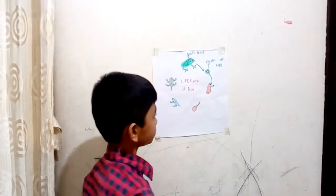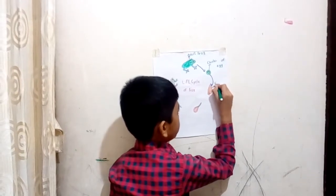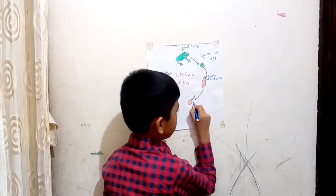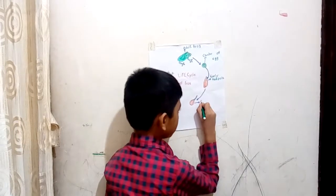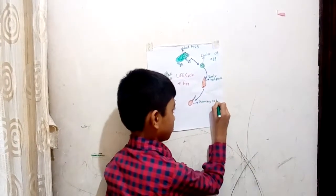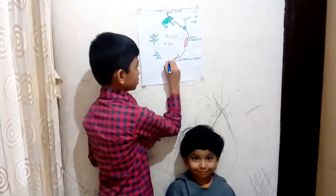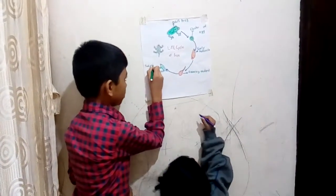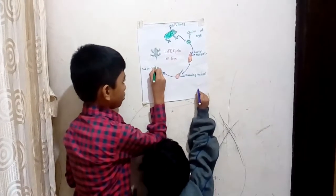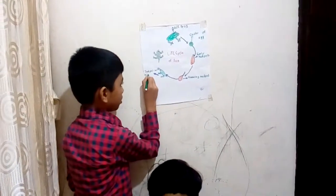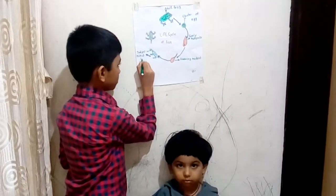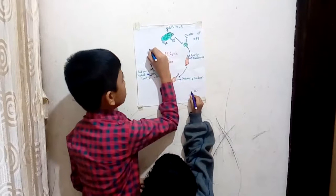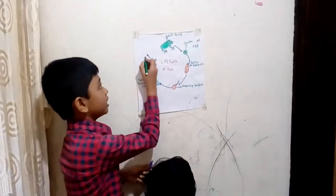Early tadpoles. And now, this is growing tadpole. This is tadpole with hind legs. This is young frog crawling water to land.